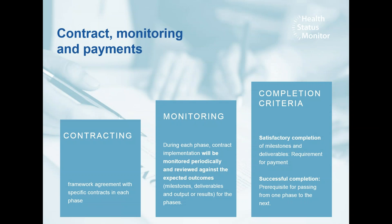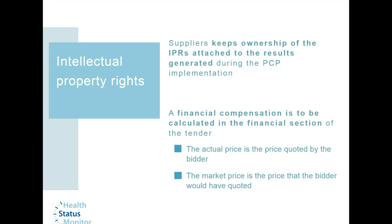We sign a framework agreement and also specific phase contracts in each phase with the awarded suppliers. Contract implementation is monitored periodically and reviewed against expected outcomes, which are milestones, deliverables, outputs, and results for each phase. Satisfactory completion of milestones and deliverables is a requirement for the settlement of payments, and successful completion of a phase is a precondition for passing to the next phase. Regarding intellectual property rights: it is the suppliers who keep ownership of the IPRs attached to the results generated during the PCP implementation. You keep the IPR of your solutions and are free to sell your solution freely in the world markets.